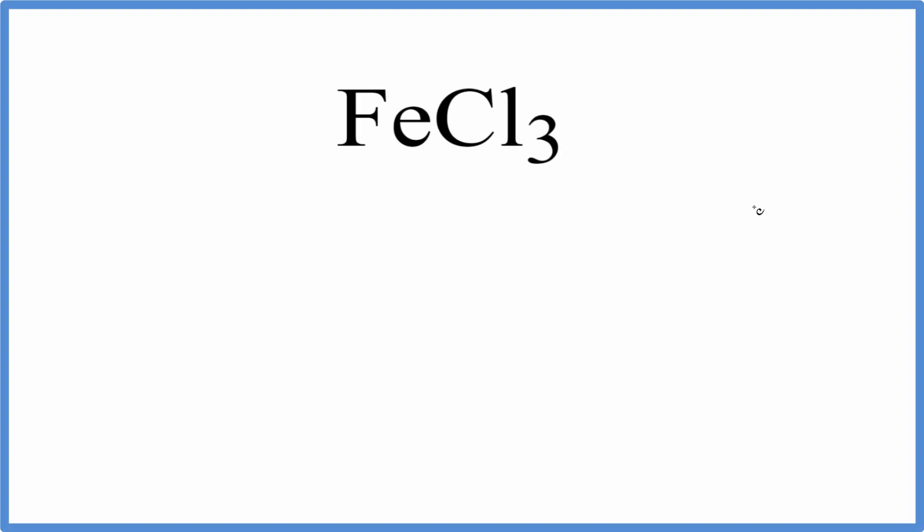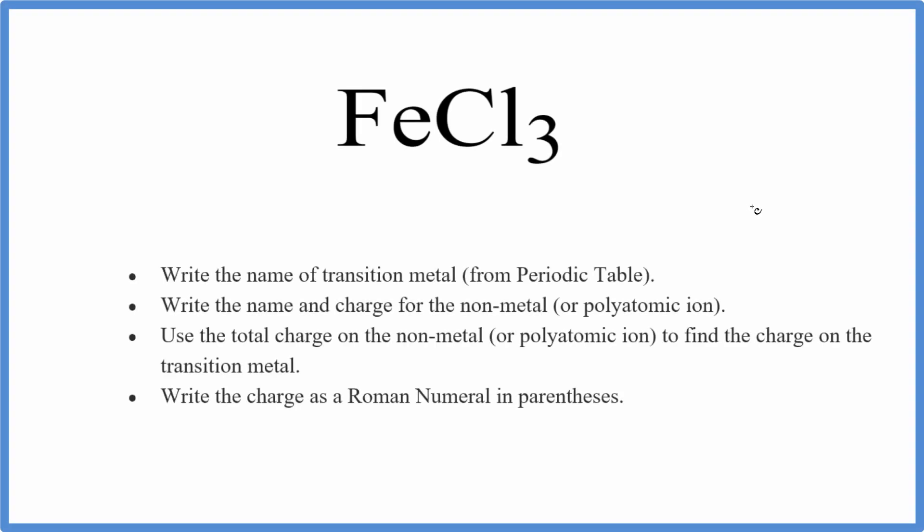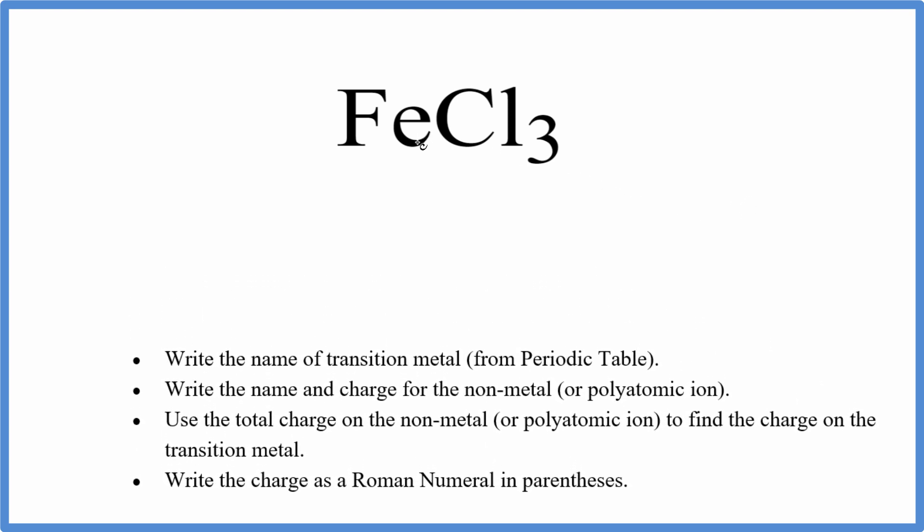To write the name for FeCl3, that's iron three chloride, we'll use some simple rules in the periodic table. On the periodic table, we look up Fe, that's iron. Then we look up Cl, that's chlorine.